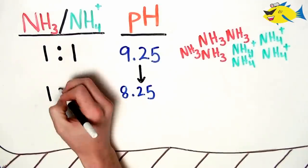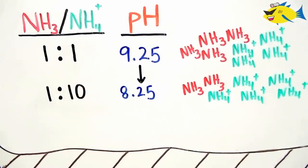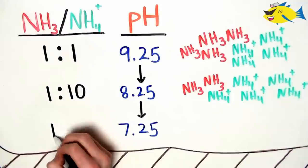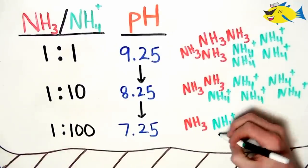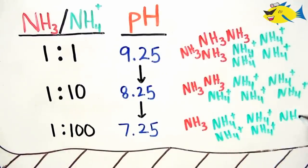For example, if our aquarium pH is 8.2, we will have 10 times more ammonium than ammonia. As the pH declines to 7.2, we'll have 100 times more ammonium than ammonia.